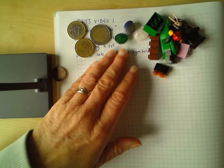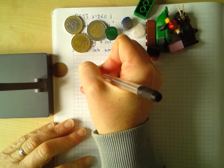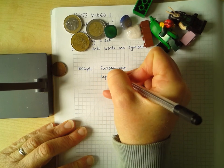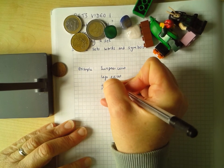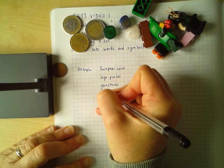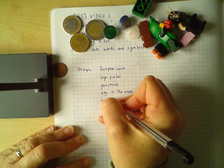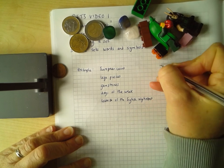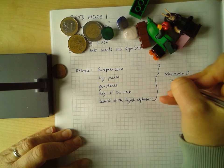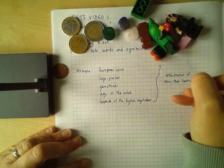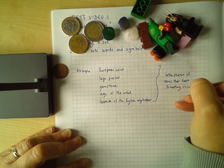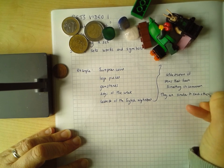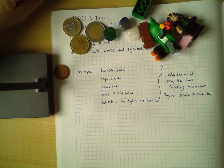You might have a set like the days of the week. You might have, for example, European coins. European coins. That was one of the ones we had. We had Lego pieces. We had gemstones. Or we might have something we can't physically hold, like days of the week. Letters of the English alphabet. So they are collections of items that have something in common. They are similar to each other.